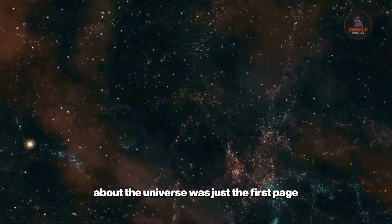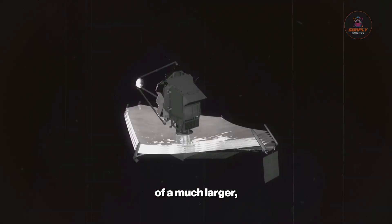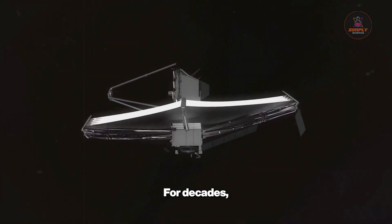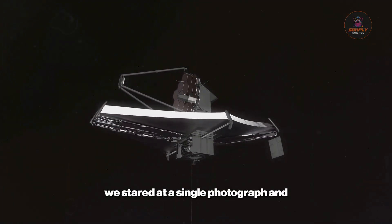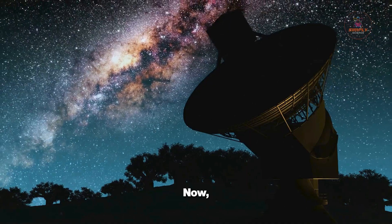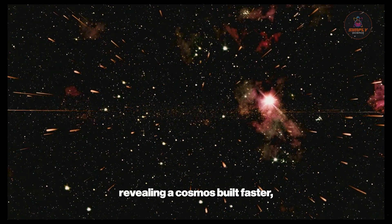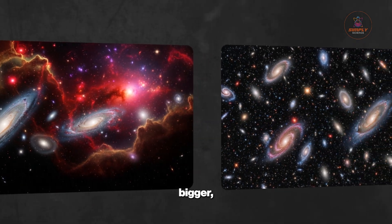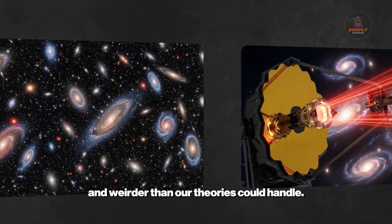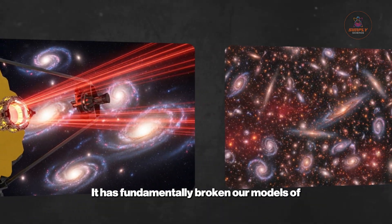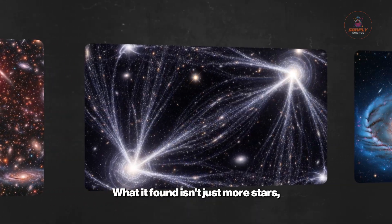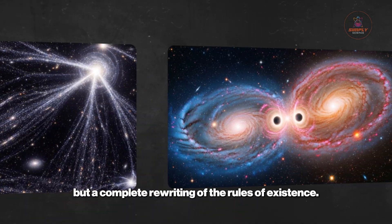What if everything you thought you knew about the universe was just the first page of a much larger, stranger book? For decades we stared at a single photograph and called it the edge of everything. Now the James Webb Space Telescope has ripped that page out, revealing a cosmos built faster, bigger, and weirder than our theories could handle. It has fundamentally broken our models of cosmic evolution.